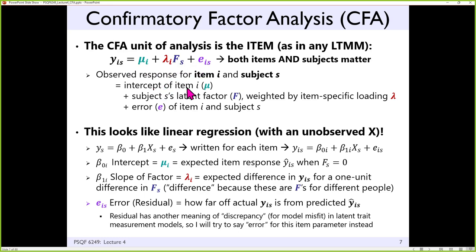The lambda is the factor loading — the term people will call a slope. E plays the role of the residual or error term. Because which item it is and which person it is can only explain so much of the variability, E is whatever is left. So we have the intercept, the subject's F score — F is what I can draw reliably, your textbook uses something like Psi for that — weighted by the item-specific loading, and then E.